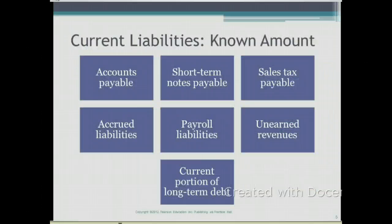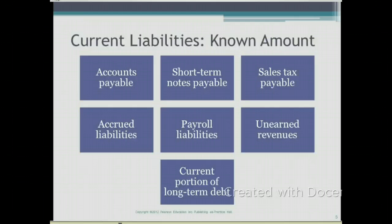All these liabilities are known amounts — some you have seen before, some are new. Accounts payable is the first one; it relates to liabilities that arise from buying inventory on credit. Short-term notes payable can also be used for purchasing inventory, but it's also used for borrowing money, and that's what we're going to talk about.